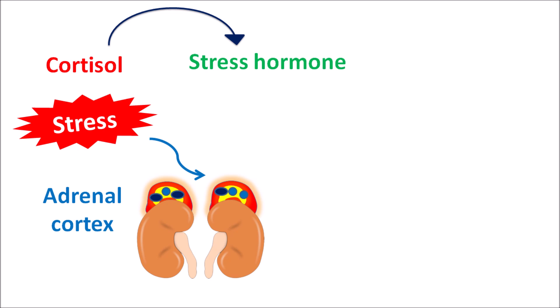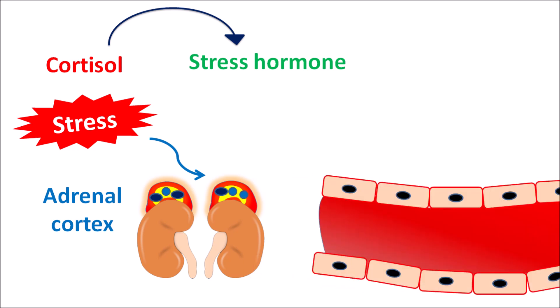Cortisol is one of the hormones released from the adrenal cortex, entering into the bloodstream. These two mediators can enter into the systemic circulation where they can affect many types of organs. Among these, cortisol can control the stress response by reducing inflammation and modifying the immune response.